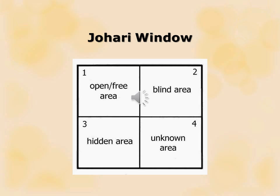A third pane would be the hidden area. These are things that we are aware of in ourselves, but that we don't reveal to others — these may be secrets, beliefs that we have that are not publicly popular. They're things that we know about ourselves that we don't wish others to know. The fourth pane is the unknown area, comprised of areas that may be blind to us or blind to others — these could involve future events that we have never had to respond to and don't know how we might react.